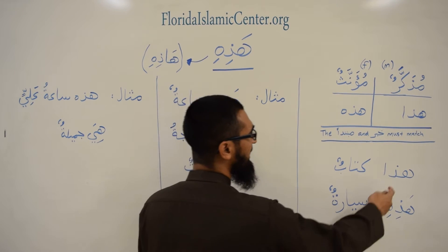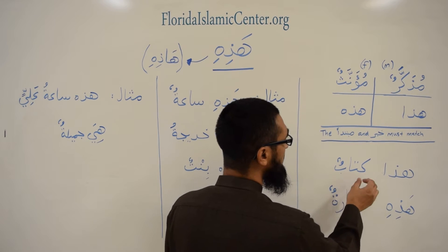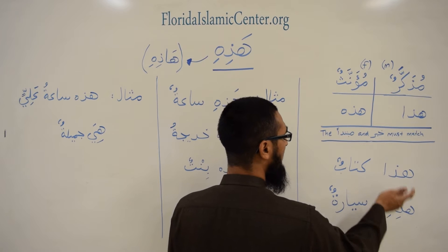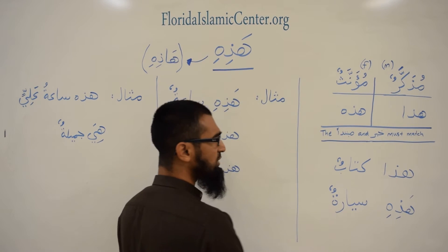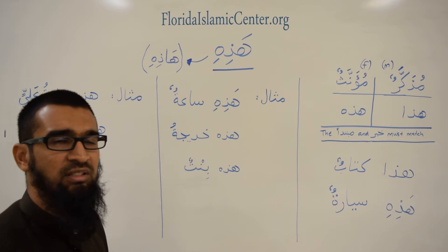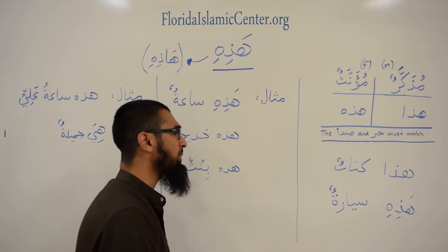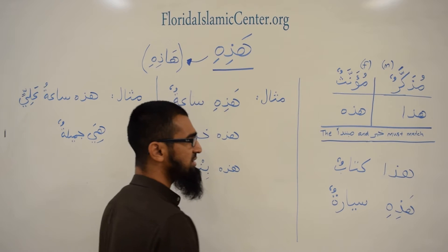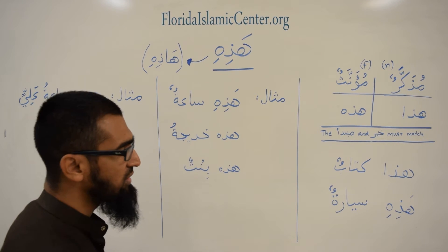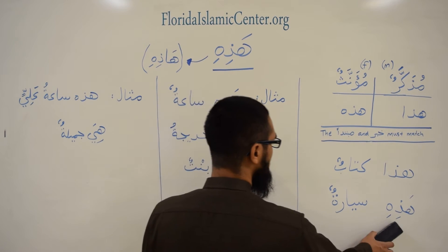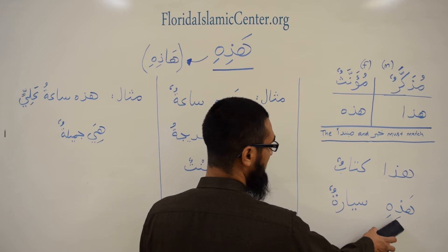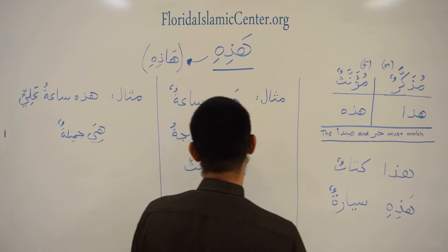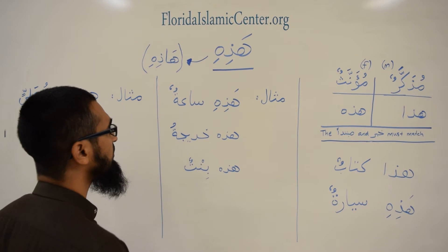You must first know what you're referring to and decide if you're going to use hadha or hadhi. Sayyaratun, which means car, is a feminine word, so you would say 'hadhi sayyaratun' — this is a car. The mubtada is mu'annath and the khabar is also mu'annath, so they match.